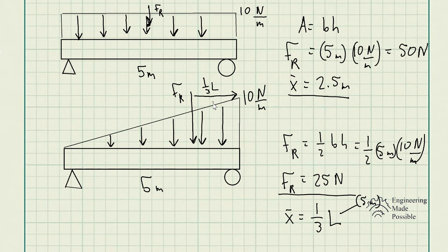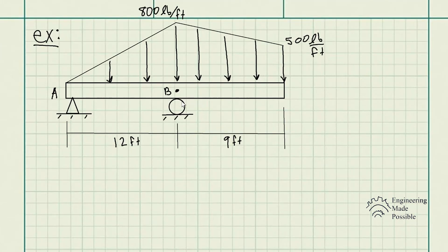These are the common distributed loads you see. You don't necessarily have to use the integral equations — you can just use the area of a triangle or rectangle. For a rectangle the centroid is at half the length, and for a triangle the centroid is at one-third of the length from the peak. Let's go ahead and do some examples. The problem statement asks us to replace the loading by an equivalent resultant force and specify its location on the beam measured from point B. We have point A and point B as supports, with dimensions of 12 feet and 9 feet.